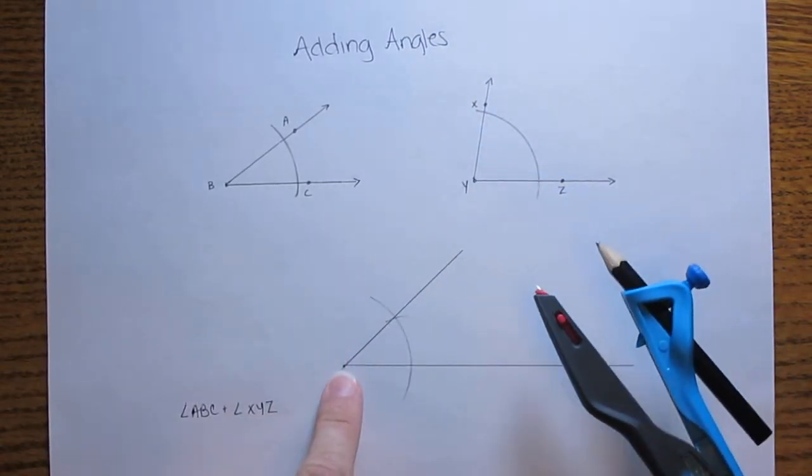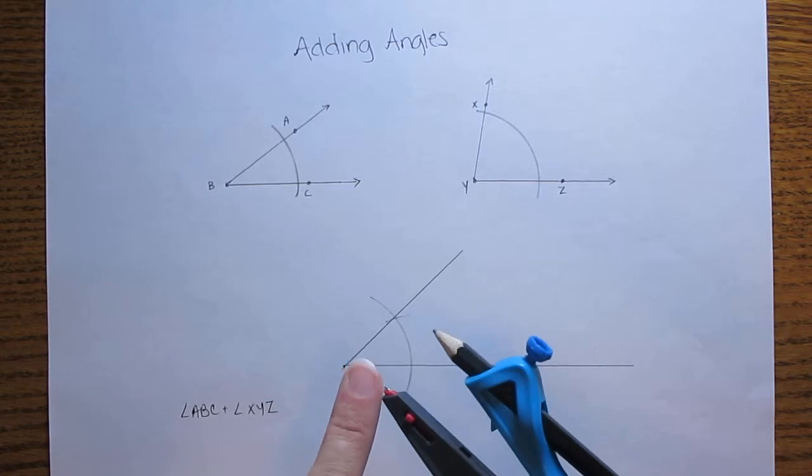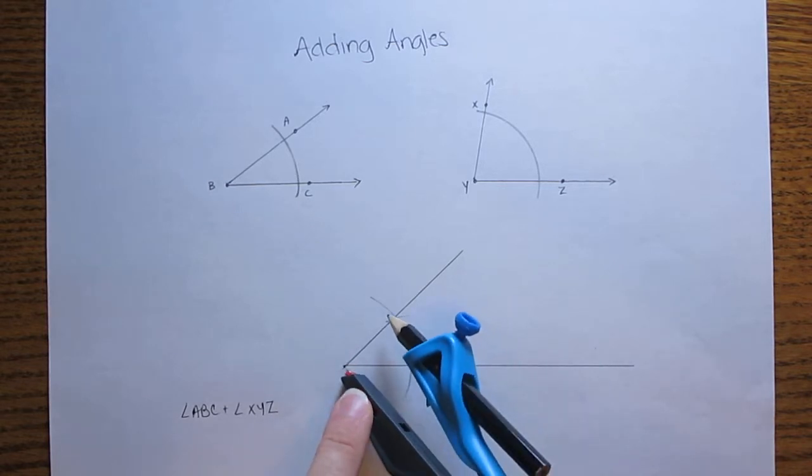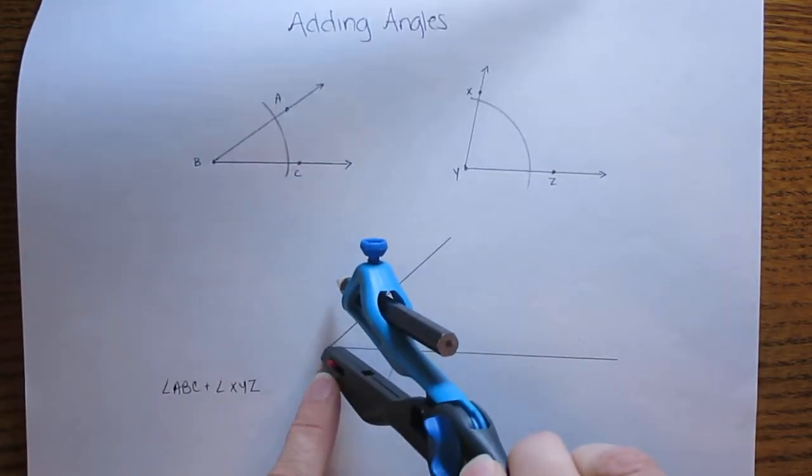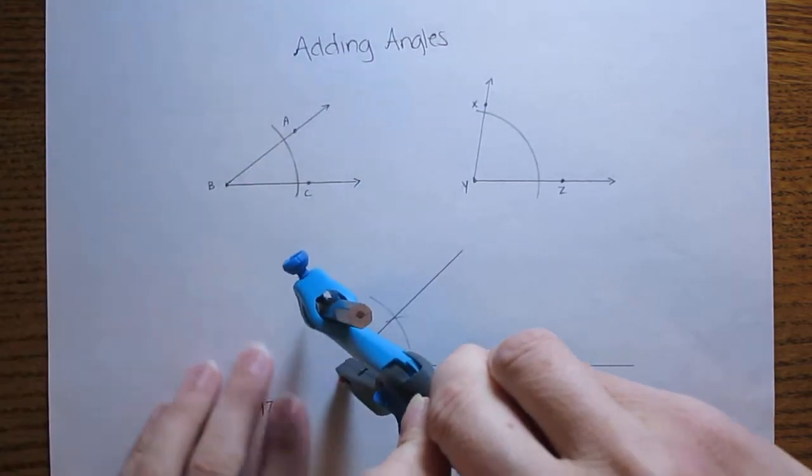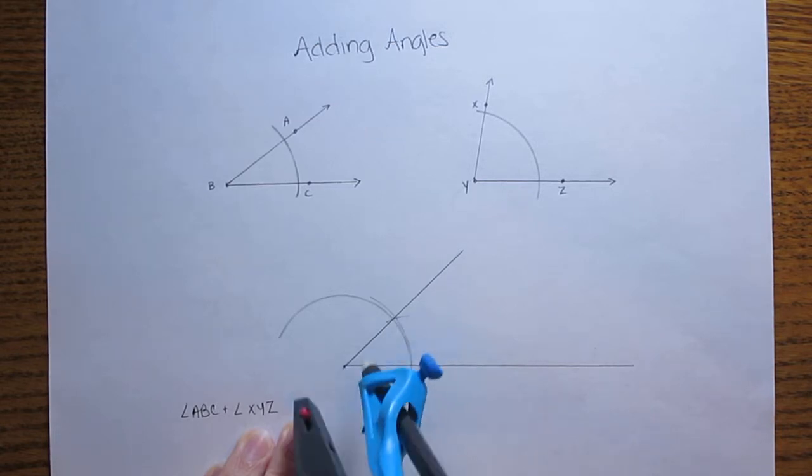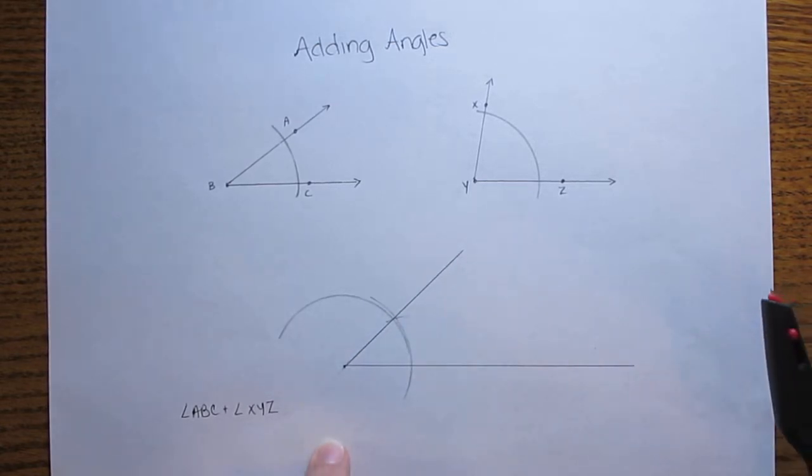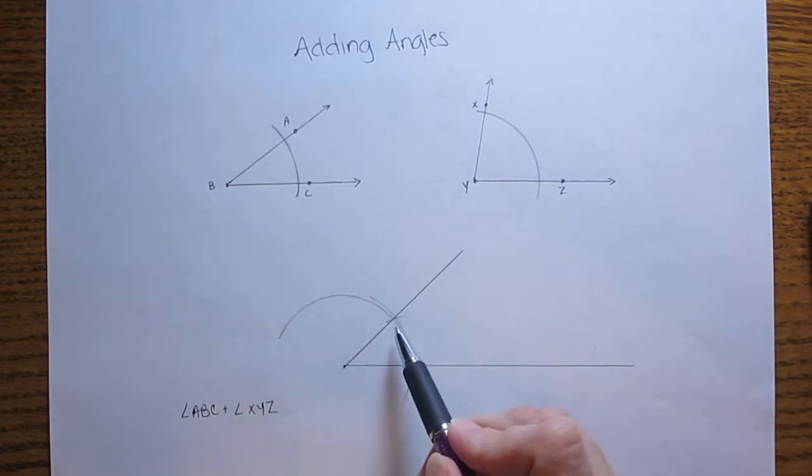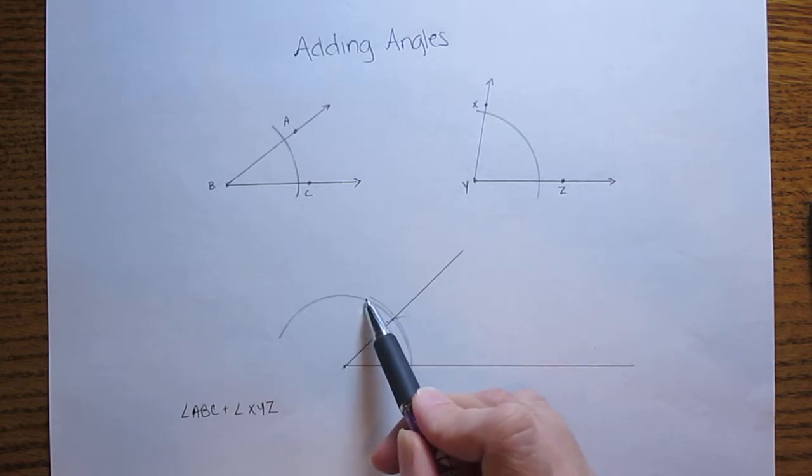We're going to now do the same thing down here with the pointed end of the compass at the vertex and I'm going to make a matching arc over there. Now you do want to be careful if your arc from the first angle that you copied looks pretty close to the arc from the second angle that you're going to copy, make sure that you can just distinguish between the two of them. This is the one that I'm going to be looking at right now.